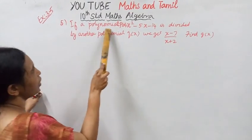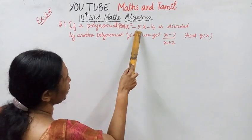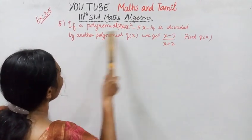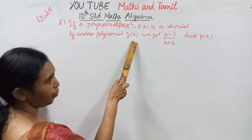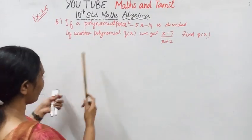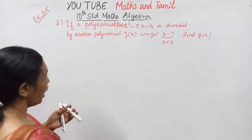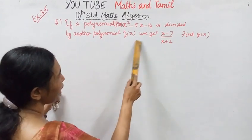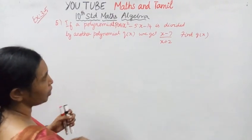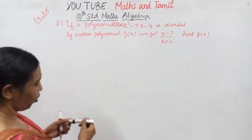If a polynomial P of X, where P(X) = X squared minus 5X minus 14, is divided by another polynomial Q of X, then we get (X minus 7) by (X plus 2). Find Q of X.